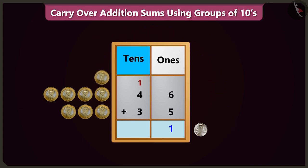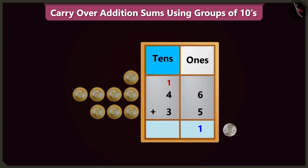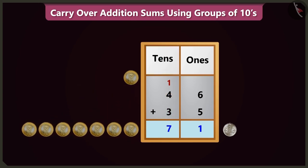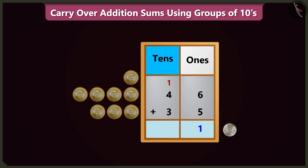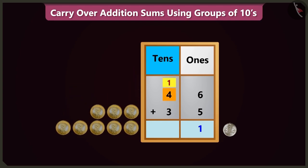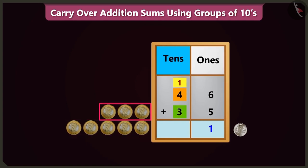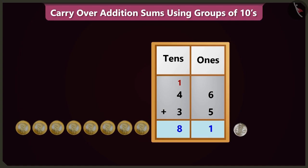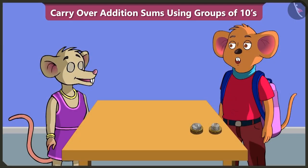Now in the tens box, adding four and three will make seven. Hey Chi Chi, you did not count the carryover written in the tens box! Oh, I made a mistake. Adding the carryover one to four makes five, and adding five and three makes eight. The total amount is eighty-one.